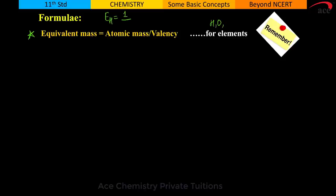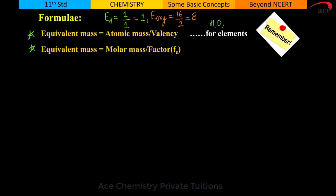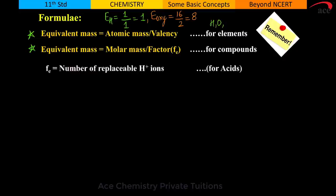So equivalent mass for elements is atomic mass divided by valency, and for molecules or compounds it is molar mass divided by n-factor. This n-factor is a special term developed to understand the equivalent mass concept clearly. For acids, n-factor (n) equals the number of replaceable H⁺ ions — for HCl it is 1, for sulfuric acid it is 2.